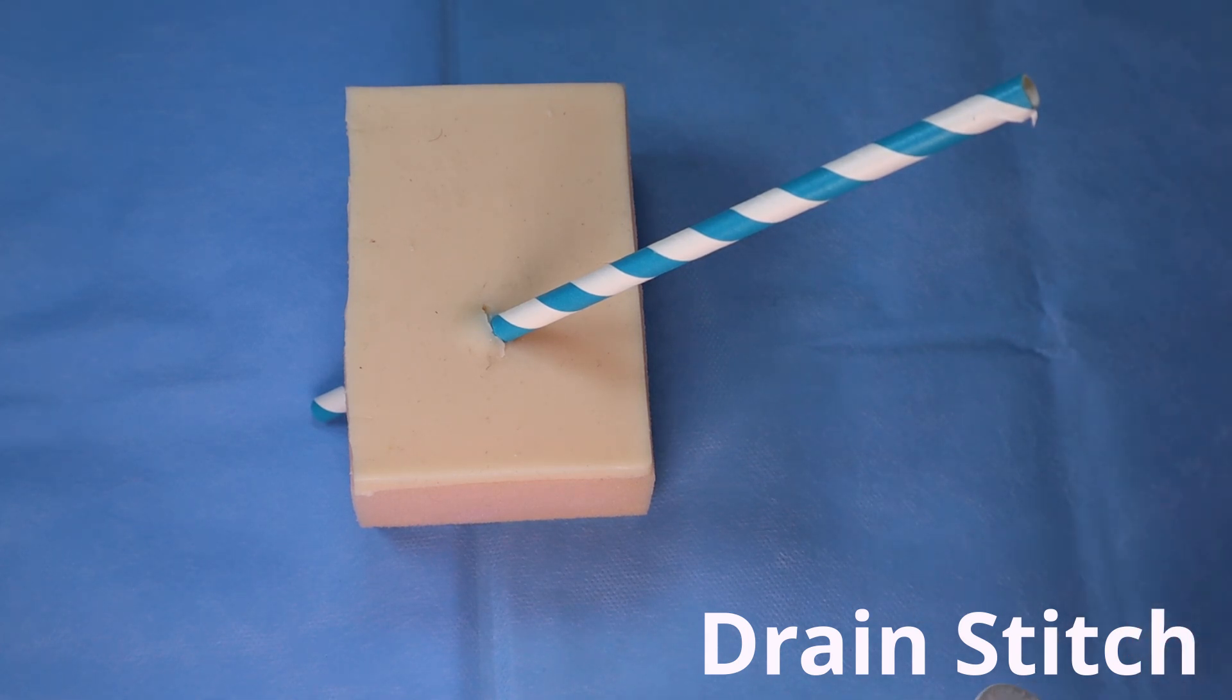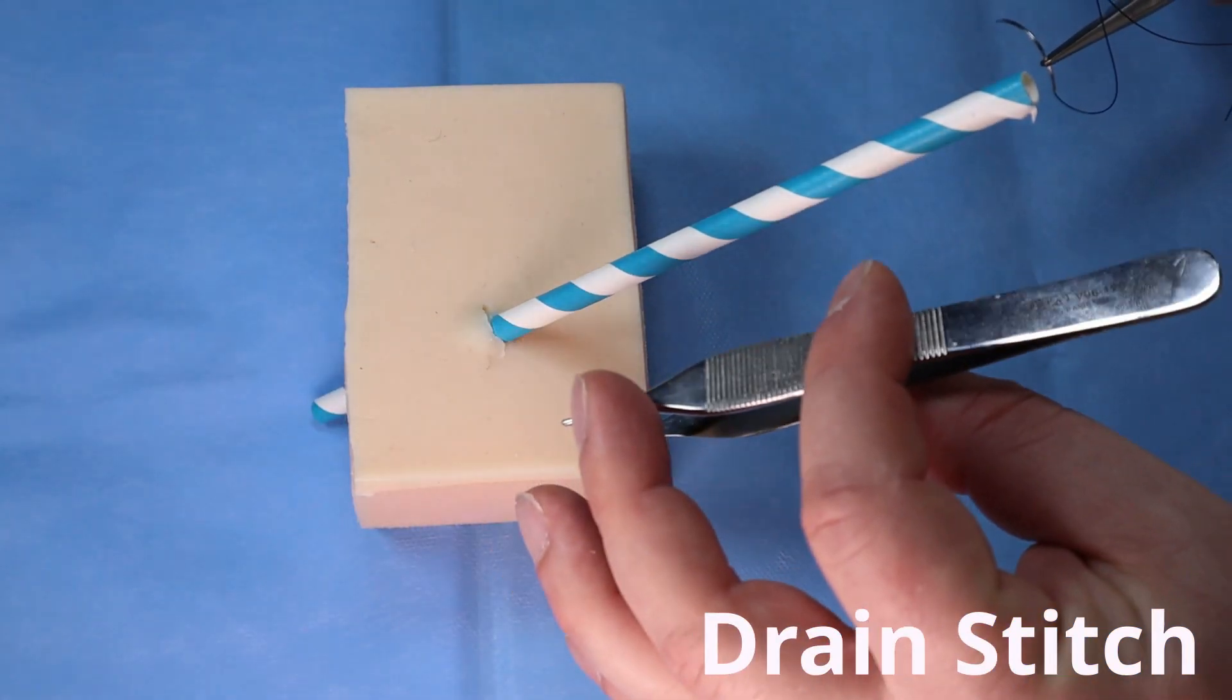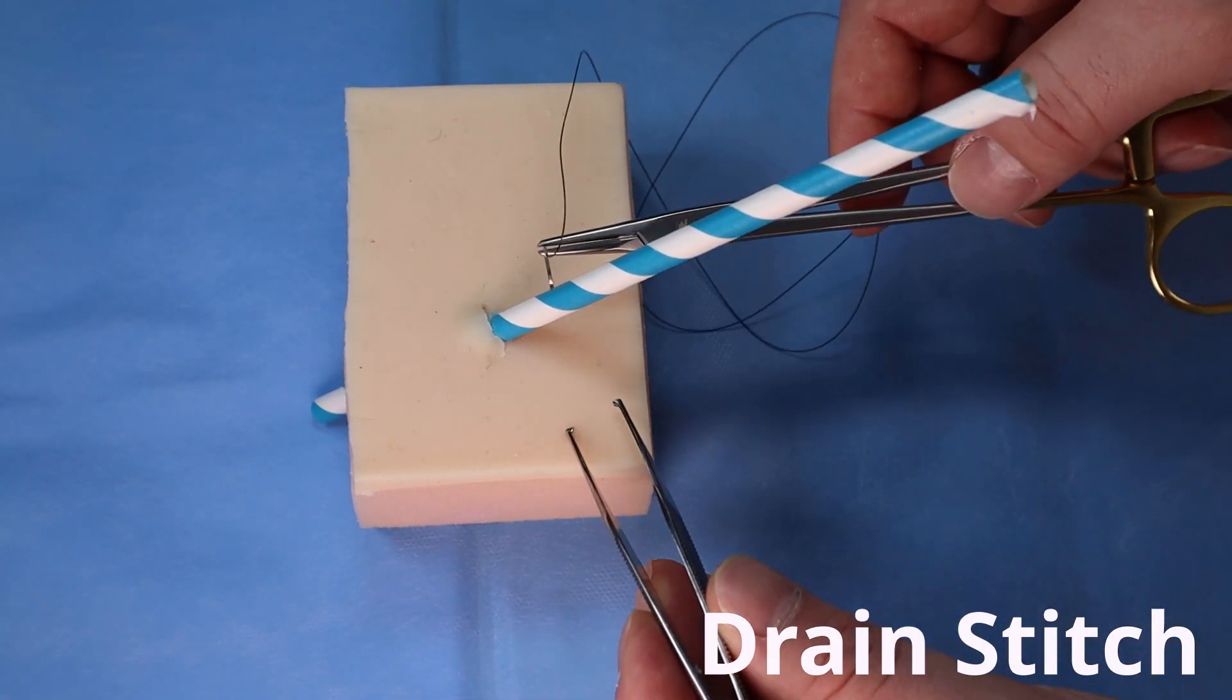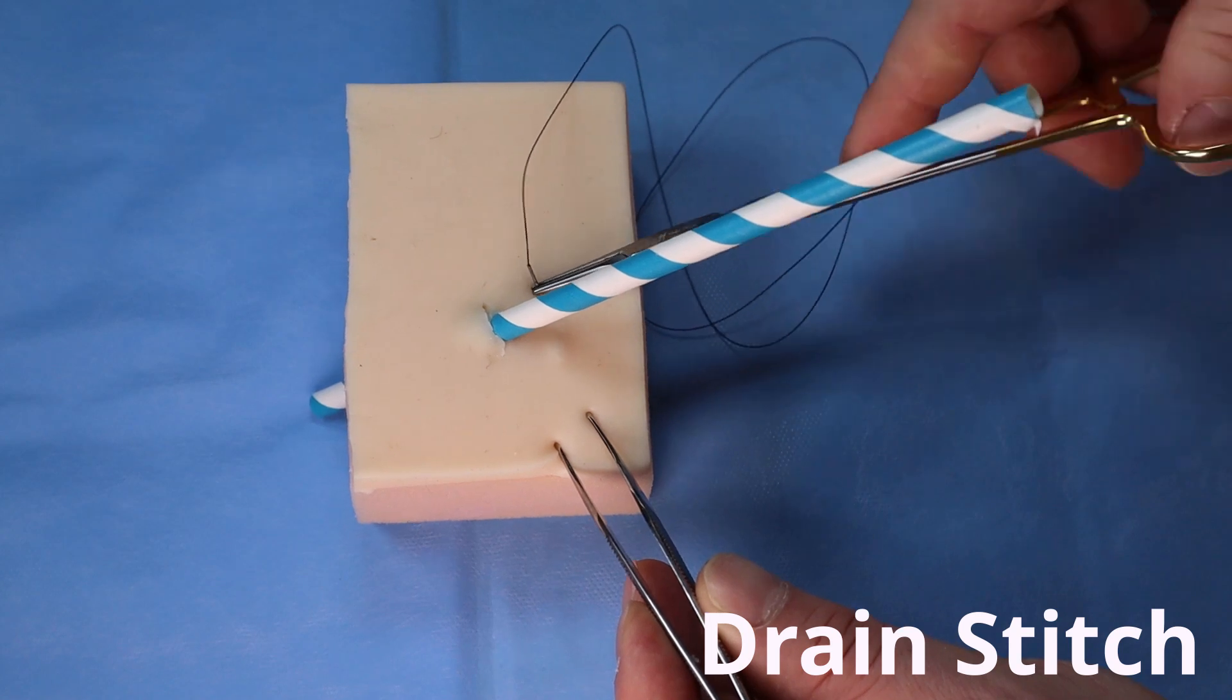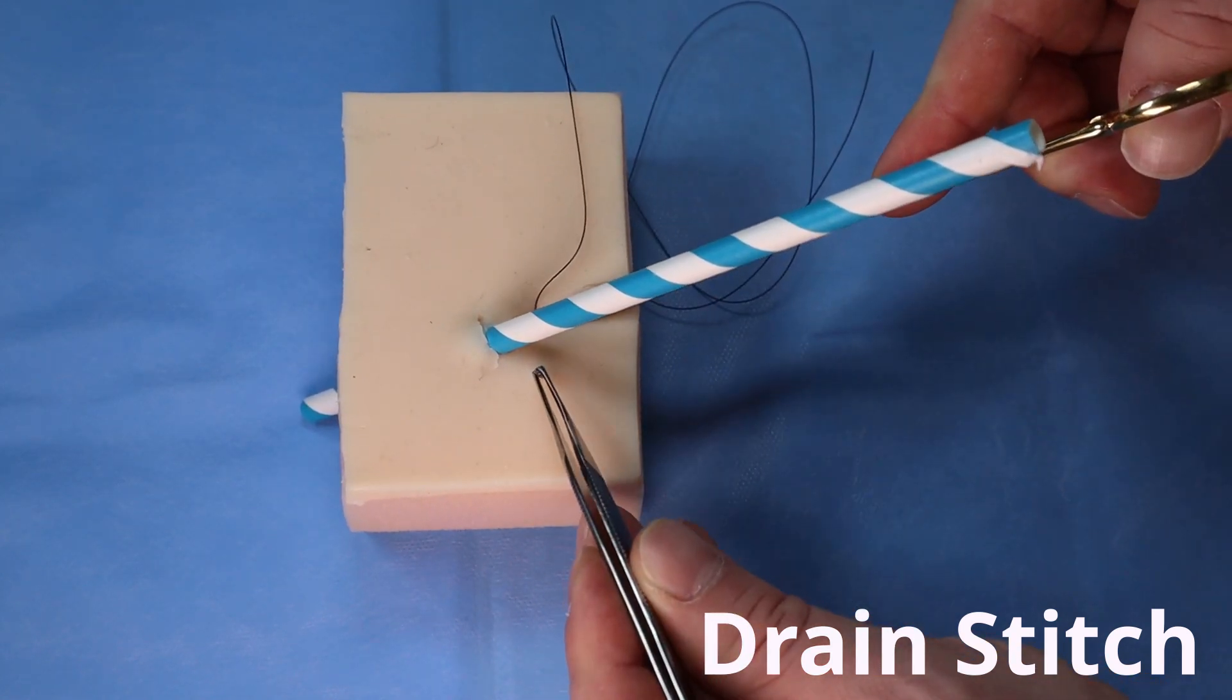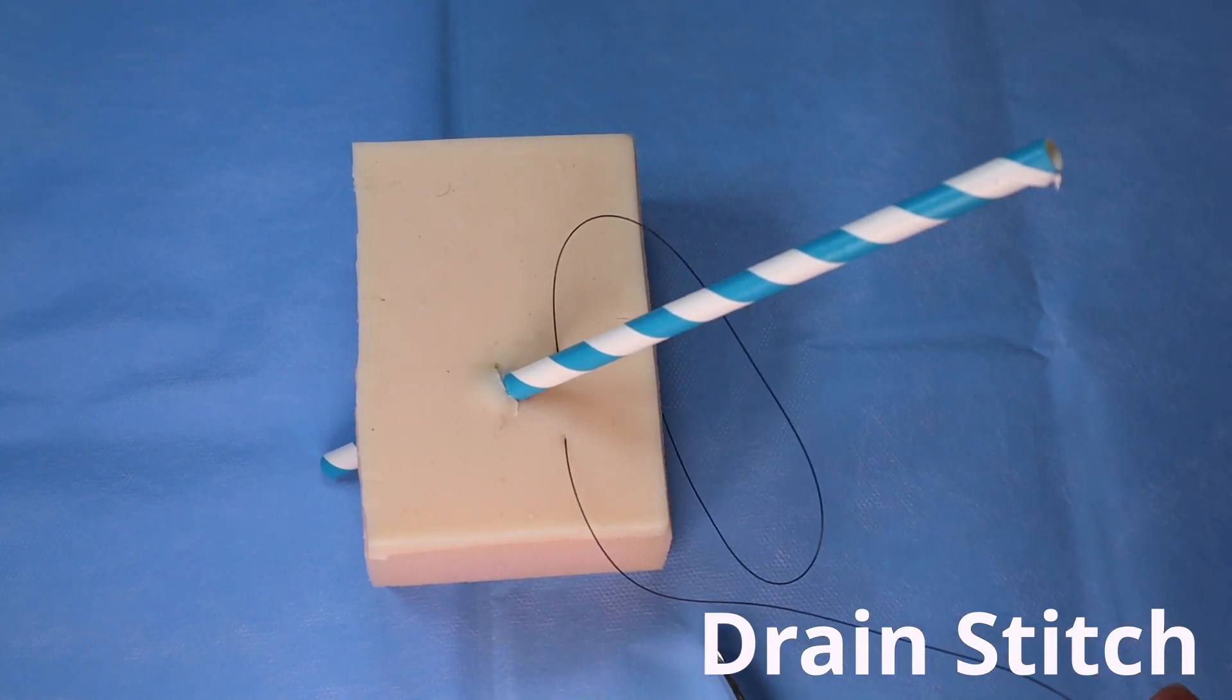Next, I'm going to take a nylon suture. It's a non-absorbable suture that's typically used for this purpose. Considering the direction, the straw is rigid so it's already facing the direction I want. I'm going to throw a simple interrupted suture down here at the skin as our base.